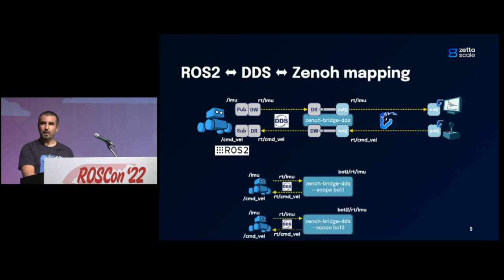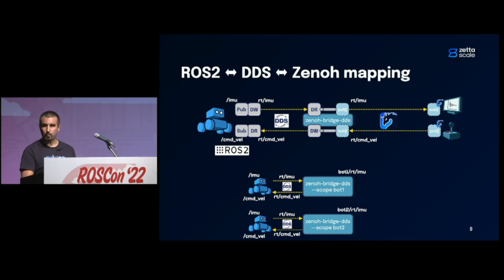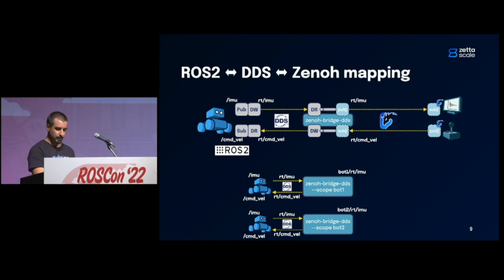What if we have several robots both using the same topic names? With DDS, we don't want them to clash in the same network. Usually you would use the localhost-only environment variable to scope DDS communication only to your robot. On your robot, you deploy the Xeno DDS bridge and use a specific option — a scope — and Xeno will automatically add this scope as a prefix to the Xeno topic used.